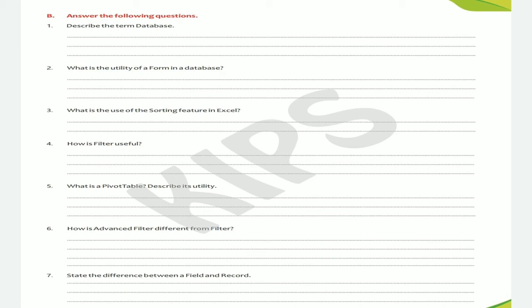Second: what is the utility of form in a database? A form contains numerous fields or spaces to enter, modify, and view one record at a time. Each field record has a field name so that the user who views or enters data in it gets an idea of its content.